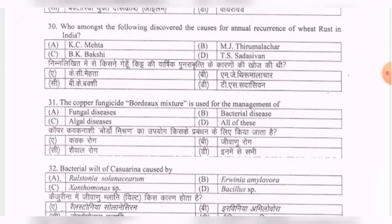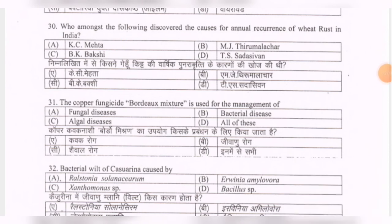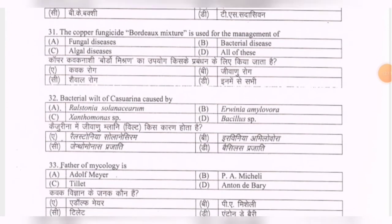Next question: who among the following discovered the causes for annual recurrence of wheat rust in India? Options are K.C. Mehta, M.J. Thirumalachar, B.K. Bakshi, T.S. Sadasivan. The correct option is the first one — K.C. Mehta.